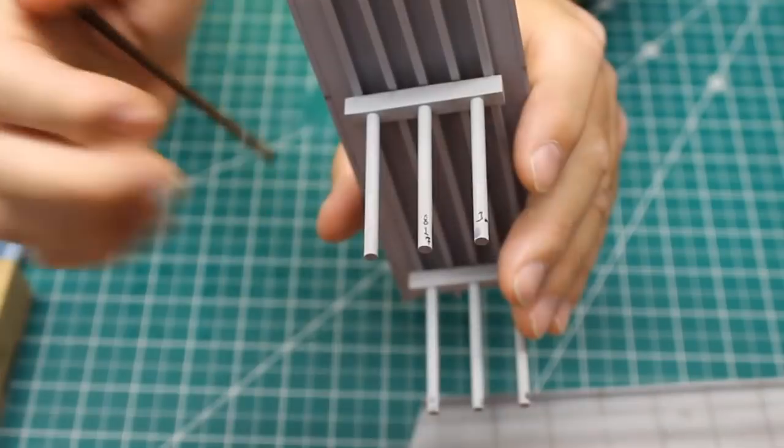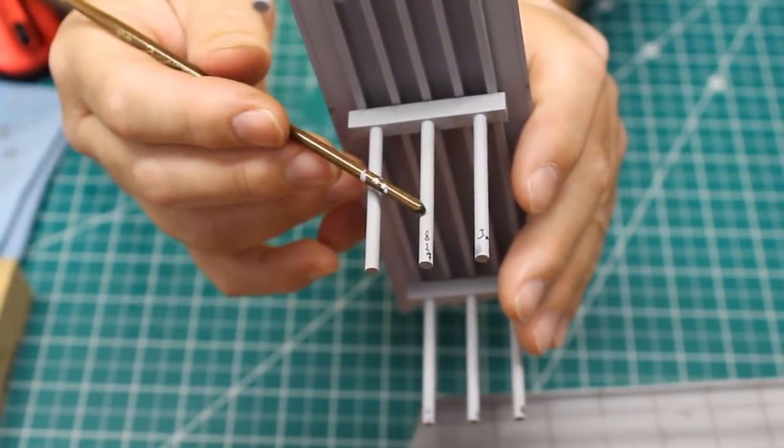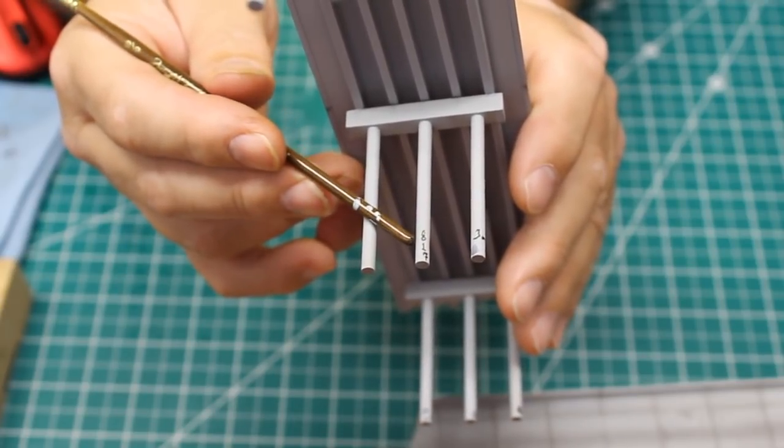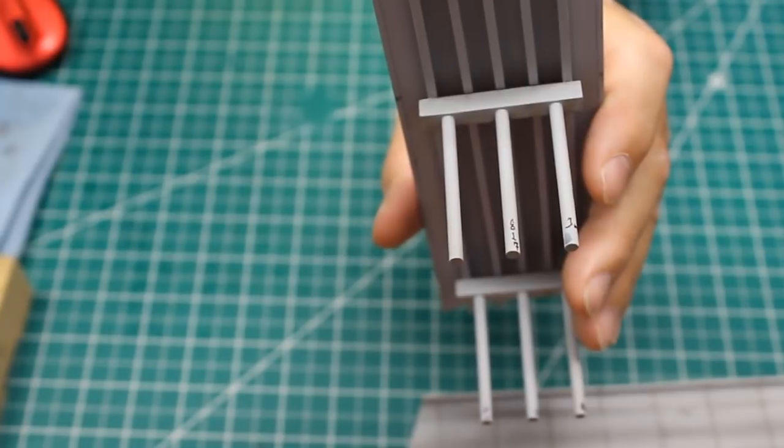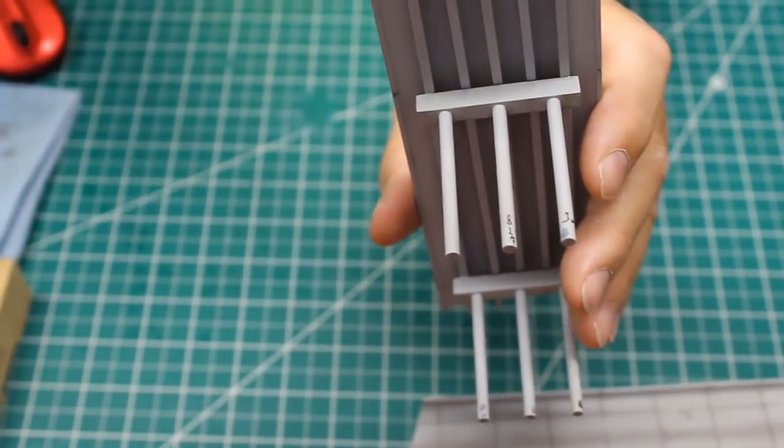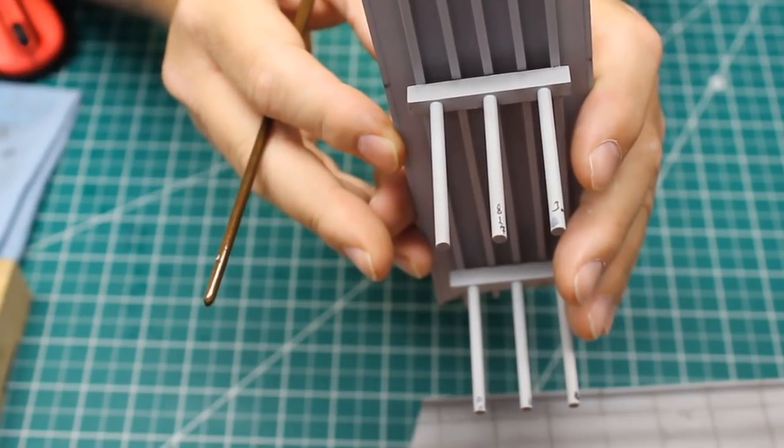The prototype has some very basic graffiti on the pylons near the ground, as well as many painted over patches where graffiti has been covered up. I added patches using splotches of a darker gray paint, and then I added some very nondescript graffiti using a super fine sharpie.